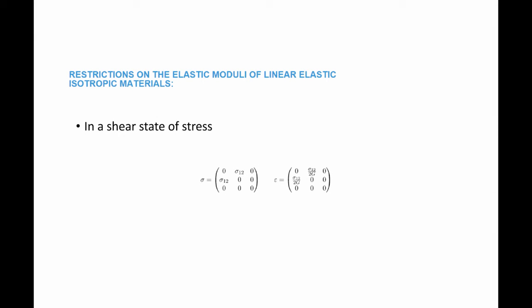Similarly, in a shear state of stress with sigma_12 and sigma_21, the corresponding shear strains are sigma_12 over 2G and sigma_21 over 2G. The energy is equal to the sum of each stress component multiplied by the corresponding strain component: sigma_12 times sigma_12 over 2G, plus sigma_21 times sigma_21 over 2G, multiplied by one half because of linearity. This number has to be greater than zero, and therefore G has to be greater than zero, which implies Poisson's ratio has to be greater than negative one.